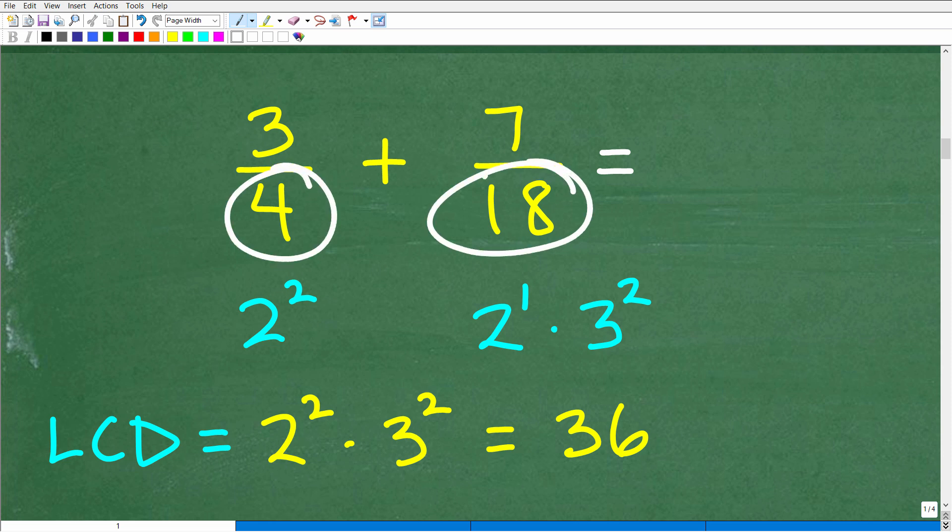But anyways, what we need to do here is prime factor the denominators. Some of you might be like, oh yeah, I can see the LCD is 36. That's what the LCD is here. So if you knew that, that's great. But here, the prime factors of 4 can be expressed as 2 times 2 or 2 squared.